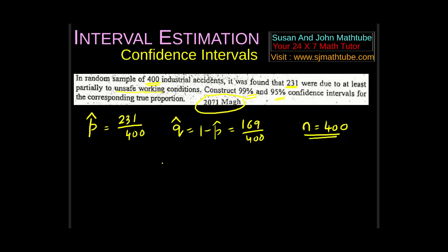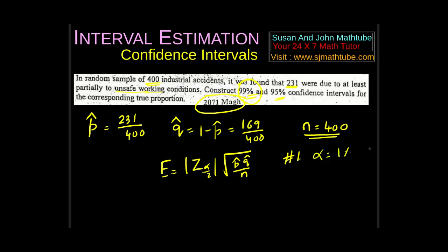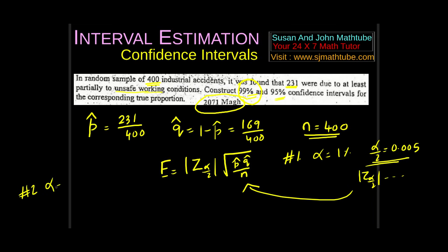The formula for E is |z_{α/2}| × √(P̂Q̂/N). Case 1: use 99% confidence, so alpha = 1%, alpha/2 = 0.005. The same z value applies: |z_{0.005}| = 2.575. Plug in and calculate. Case 2: use 95% confidence, so alpha = 5%, alpha/2 = 0.025. Plug in and calculate accordingly.